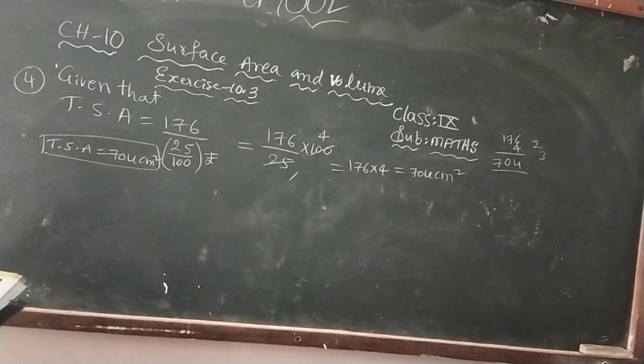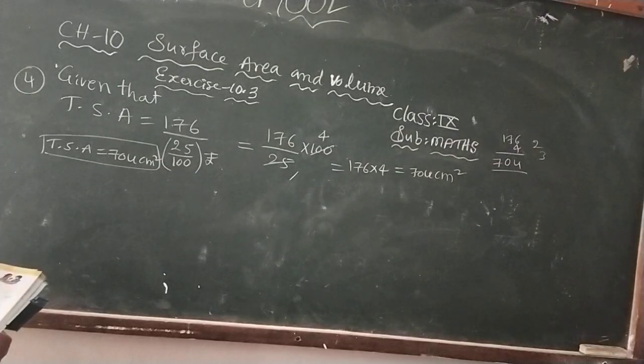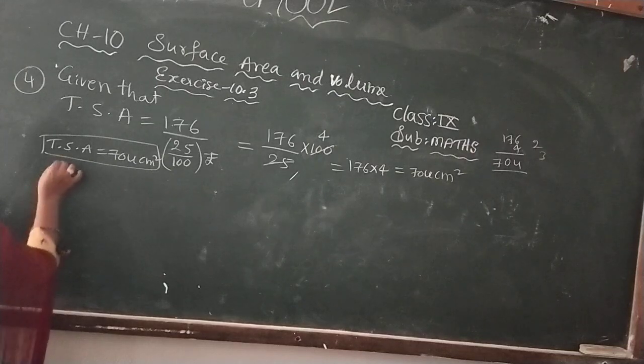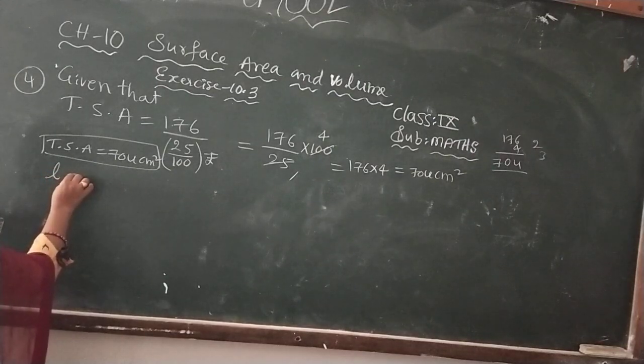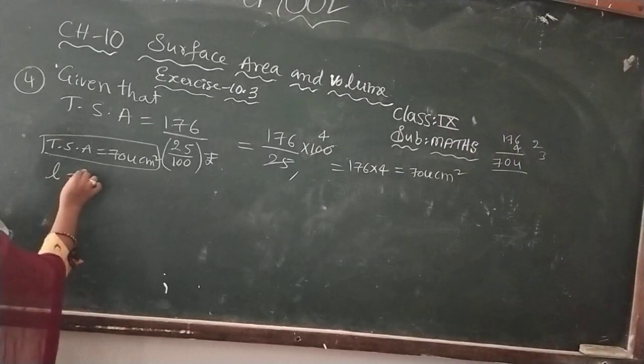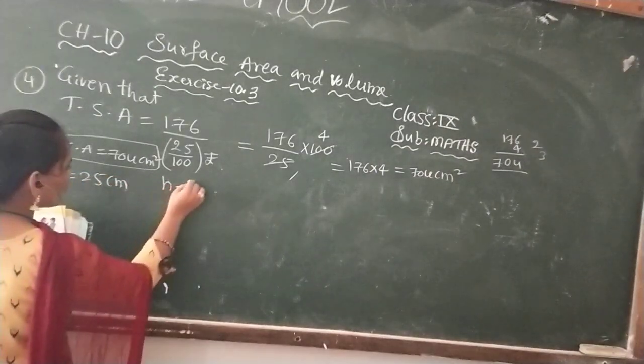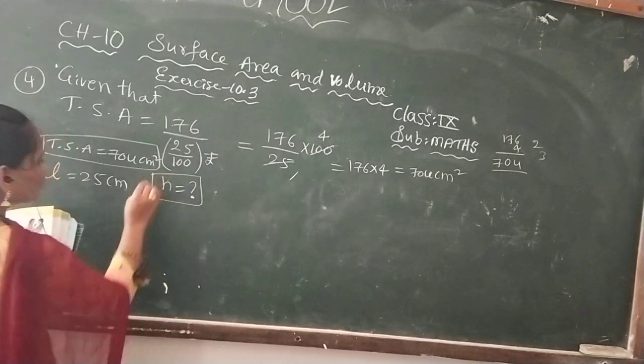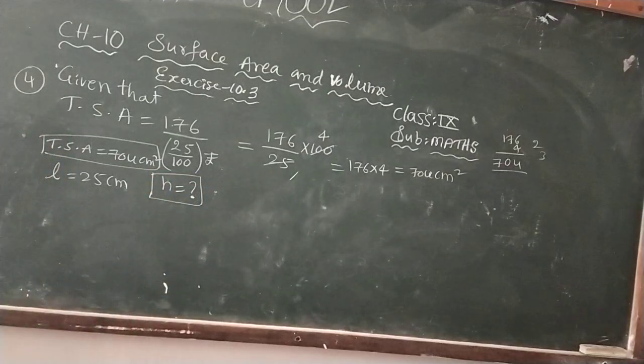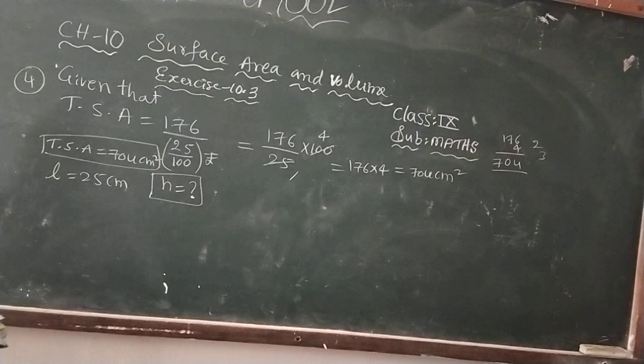Now, here find the volume of a cone if slant height, slant height is given, that is L. L is given 25 cm. Now, volume of a cone requires height. Height of a cone we need to find.